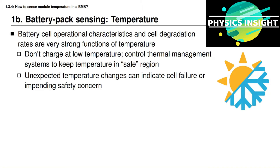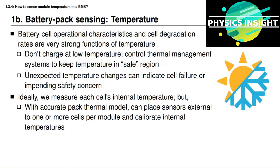We also measure temperature because some unexpected change in temperature can indicate a cell failure or some kind of impending safety concern. In an ideal situation, we would measure temperatures internal to every single cell in the battery pack, but that would require a temperature sensor inserted into the packaging, which is not feasible. Instead we depend on temperature sensors mounted external to some of the cells. Because temperature sensing is relatively expensive and temperature differences across a well-designed battery module are relatively small, we use only a few sensors at strategic locations and use a thermal model to interpolate and extrapolate estimates of temperature at every cell location.